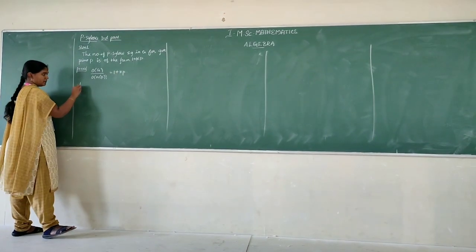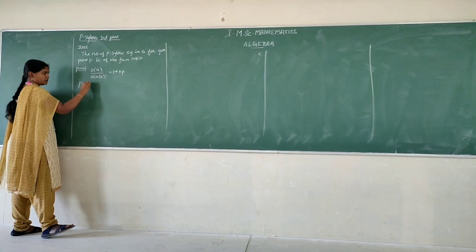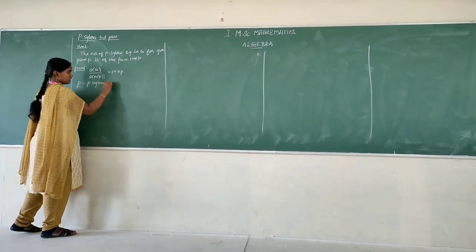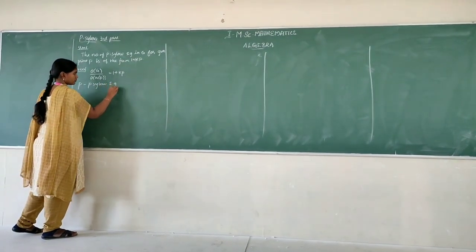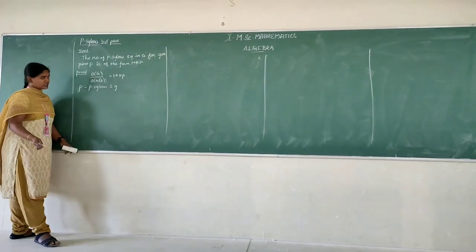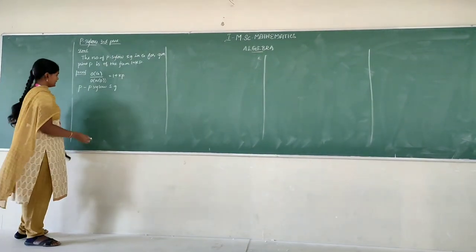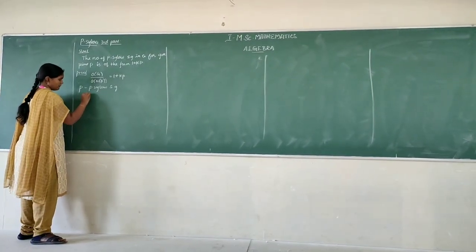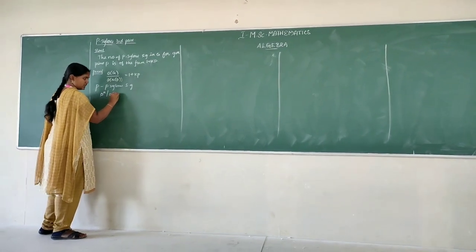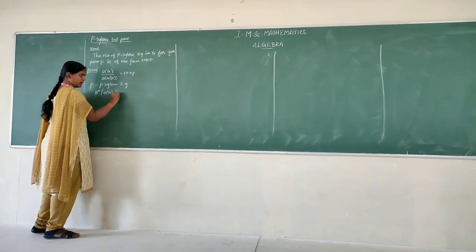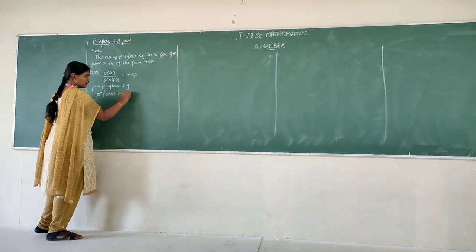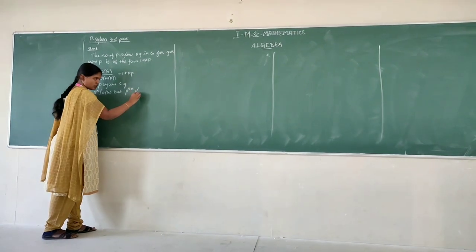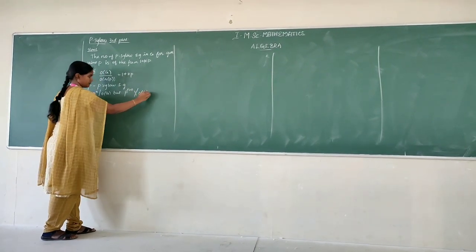Now let us say P is a Sylow p-subgroup. We already know from Sylow's First Theorem that P power n divides the order of G, but P power n plus 1 does not divide the order of G.